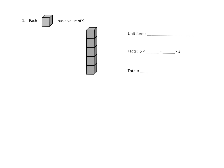Each box has a value of nine, so we have five nines. 'Unit form' means we want to figure out the answer for five nines — that's the fact five times nine, which by the commutative property also equals nine times five. Adding up five nines might be hard for kids, so they might prefer to think in fives.